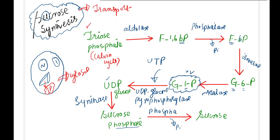The enzyme UDP-glucose pyrophosphorylase produces UDP-glucose. UDP-glucose then converts to sucrose phosphate with the help of an enzyme called sucrose phosphate synthase. The sucrose phosphate still has a phosphate group attached, which is removed with the help of an enzyme called phosphatase, ultimately yielding the desired product — sucrose — which is the transport form of carbon.